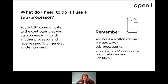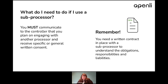If you use a sub-processor, you must communicate with the controller that you plan on engaging another processor to help you process their personal information. This is so that if you engage a new sub-processor throughout the duration of a contract, or if you change a sub-processor, you must communicate this to them. Because at the end of the day, that is you conveying their personal data to another processor. You need a written contract in place with the sub-processor, similar to the relationship between the controller and the processor. You need to ensure the sub-processor understands all of the obligations, responsibilities, and liabilities they have when helping you process the personal data.